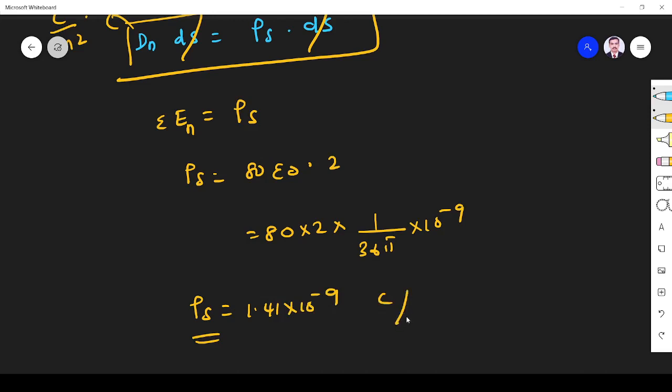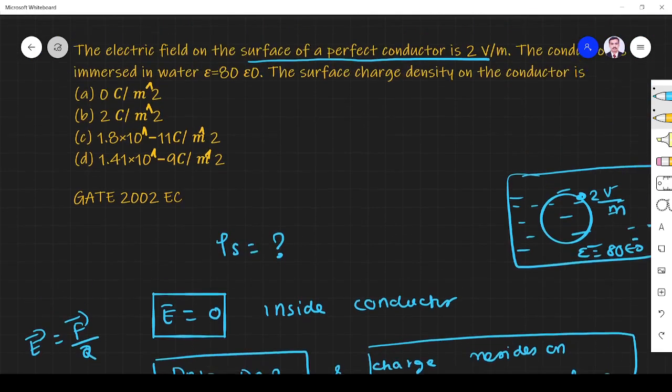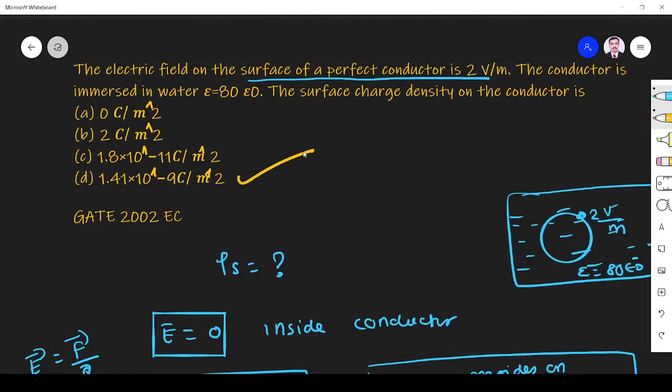If you simplify, what you get is rho s equals 1.41 into 10 power minus 9 coulomb per meter square. That is the answer: 1.41 into 10 power minus 9 coulomb per meter square. Option d is the right answer.